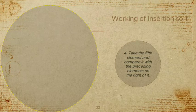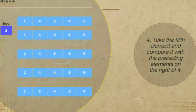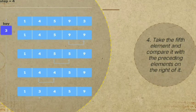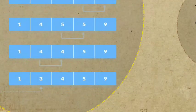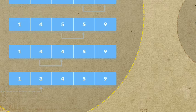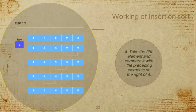Step 4: take the fifth element and compare it with the preceding elements on the right. We store it separately in key and place it behind the element smaller than it. We look for the element smaller than 3 — that is 1 — so we place 3 behind 1. After placing 3, our array elements are now sorted.